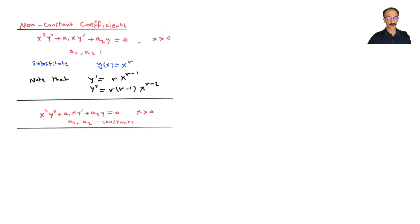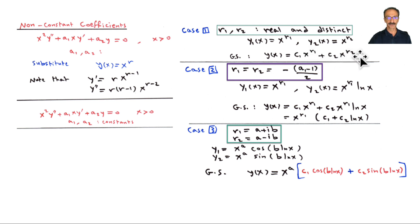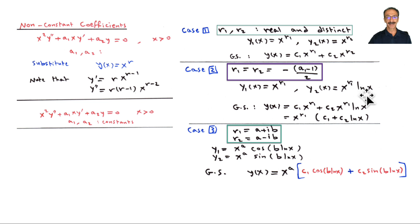Here are the three cases. Case 1: r₁ and r₂ are real and distinct — y₁ = x^r₁ and y₂ = x^r₂, so the general solution is c₁x^r₁ + c₂x^r₂. Case 2: repeated roots — y₁ = x^r₁ and y₂ = x^r₁ · ln(x).